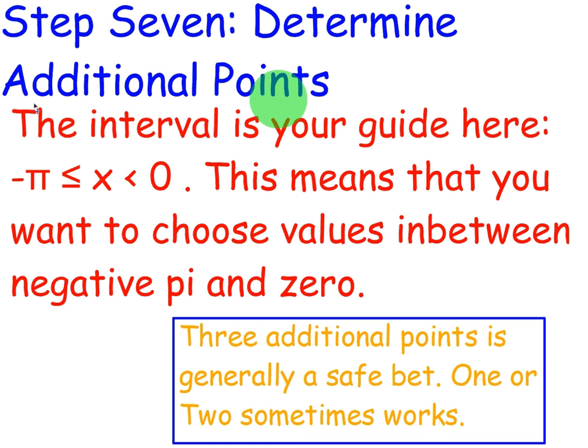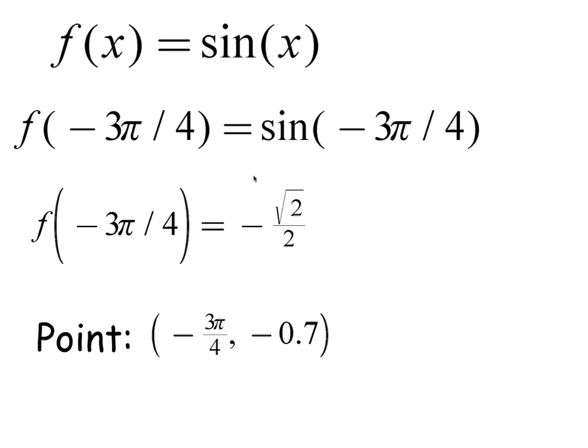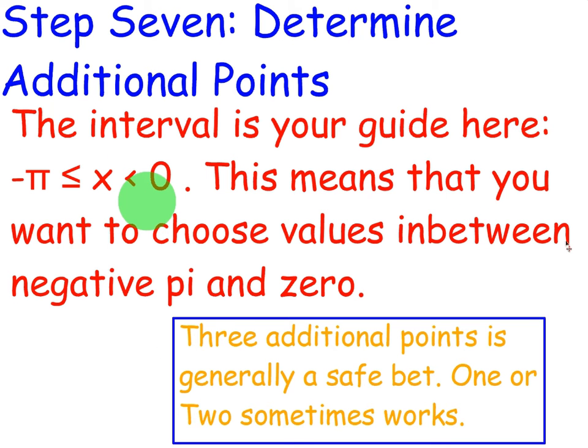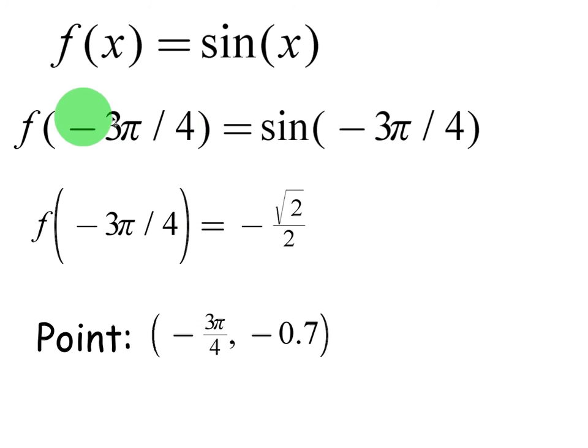Now, step 7 is to determine additional points. The interval is your guide here. So we want to pick values in between negative pi and 0 because that's what x is between. This means that you want to choose values in between negative pi and 0. Three additional points is generally a safe bet. So what's in between negative pi and 0? Well, the first thing that comes to mind that's just a little bit bigger than negative pi on the unit circle is negative 3 pi over 4.